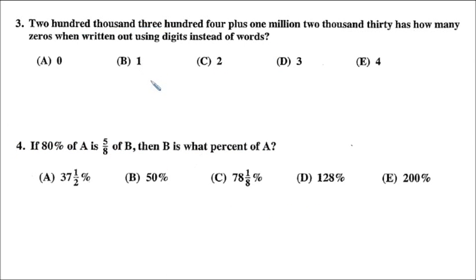Three is an interesting problem. I've seen a few of these pop up before in the UIL test. It says 200,304 plus 1,002,030 has how many zeros when written out using digits instead of words? We do need to take a sum here. 200,304. You need to write that out in digits.